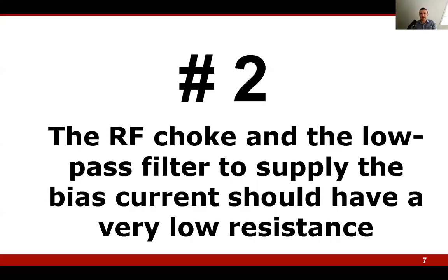During pin diode turn off, a large current flow is limited by the impedance of the voltage source and the circuitry of the bias feed to the pin diode. The RF choke and the low-pass filter used to supply the bias current should have a very low DC impedance. In other words, use inductors with the lowest possible resistance. In practice the parasitic resistance can be quite significant, so try to minimize it.